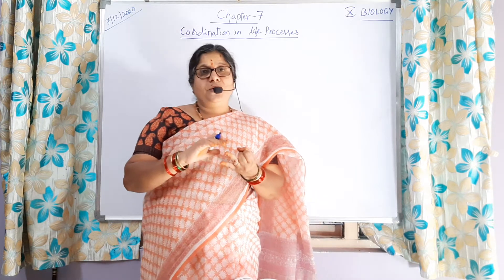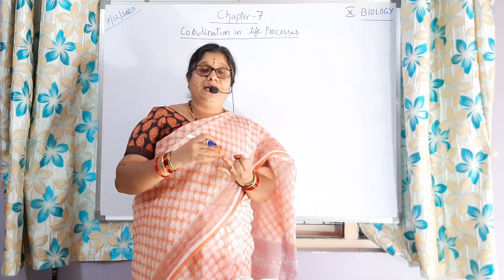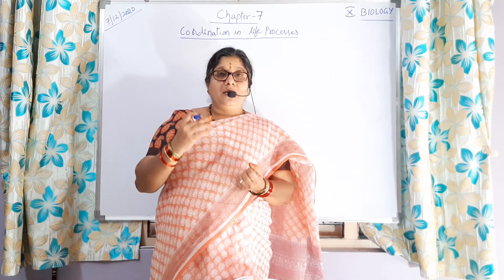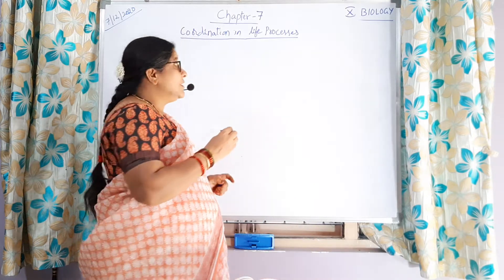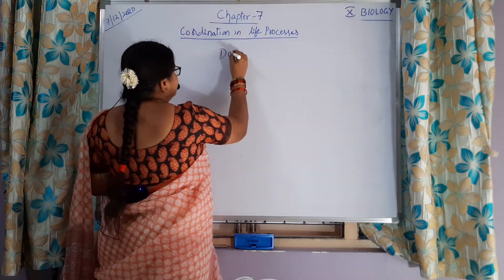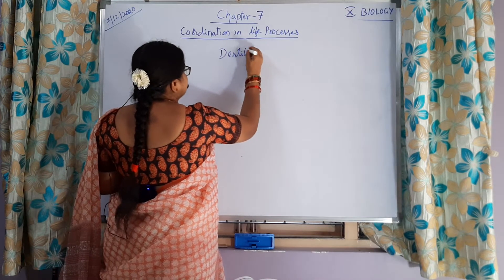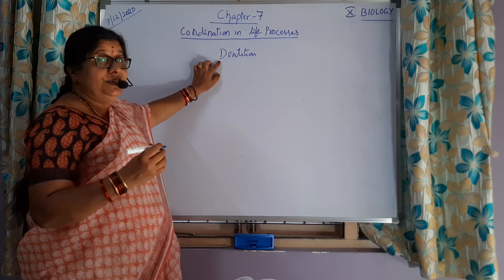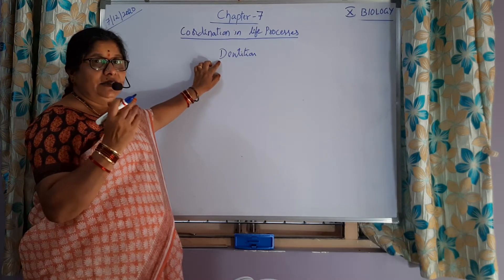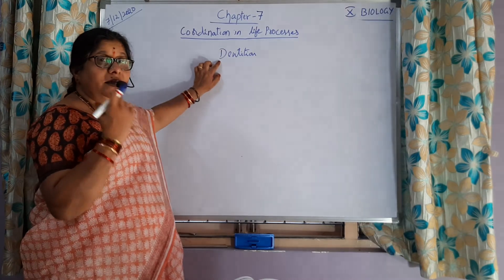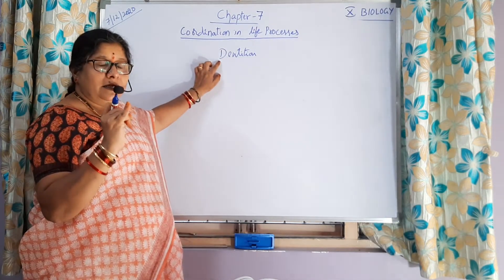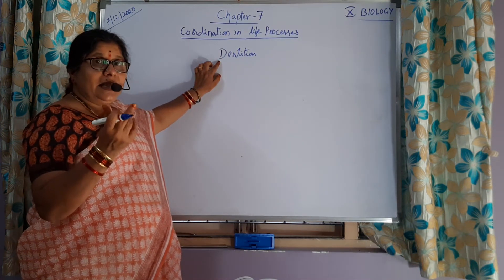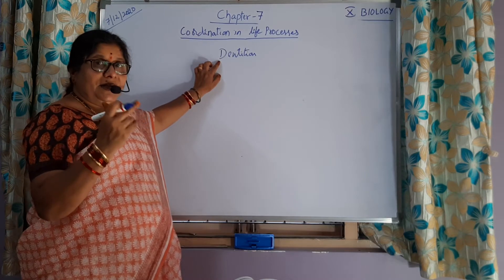You are observing different types of teeth. So what do we call the teeth arrangement? The arrangement of teeth in upper and lower jaws is called dentition. When we observe the chart, we are observing teeth of different sizes and different shapes.